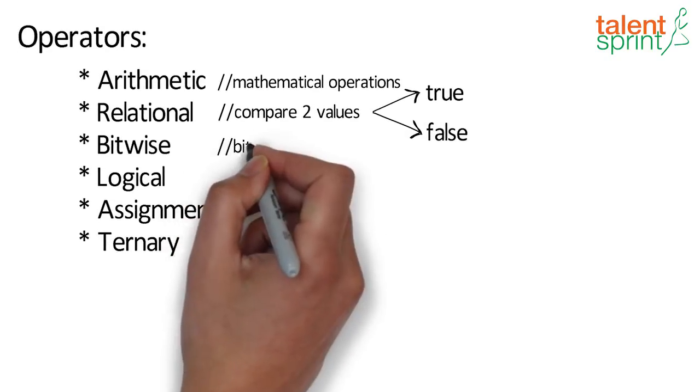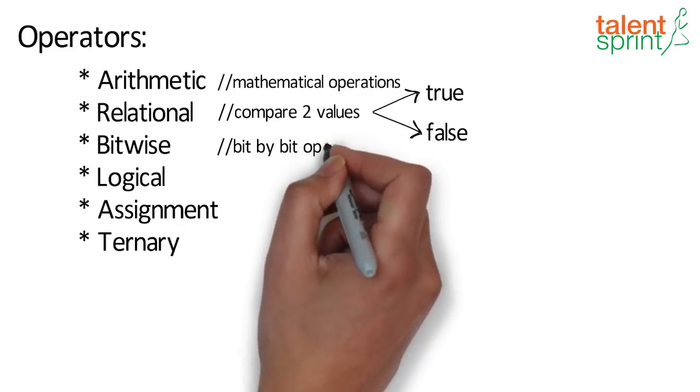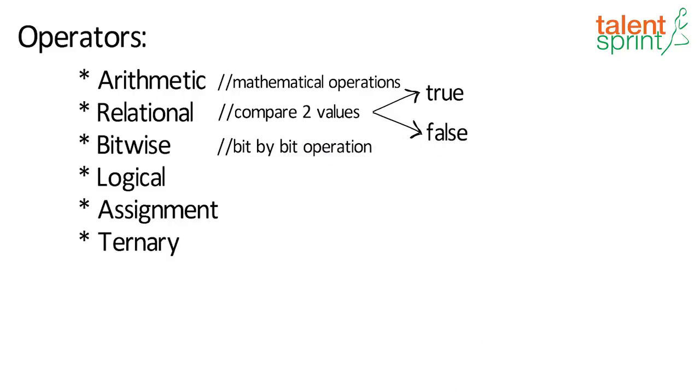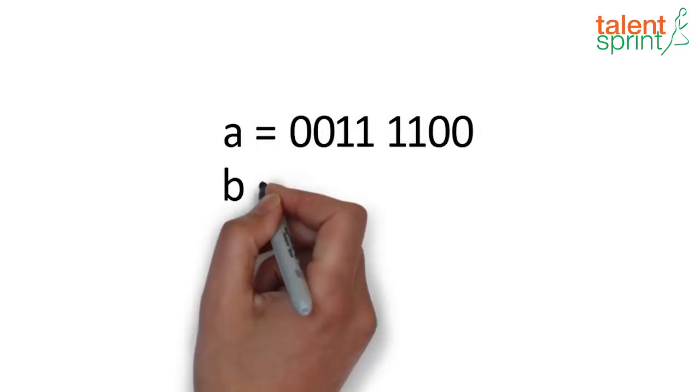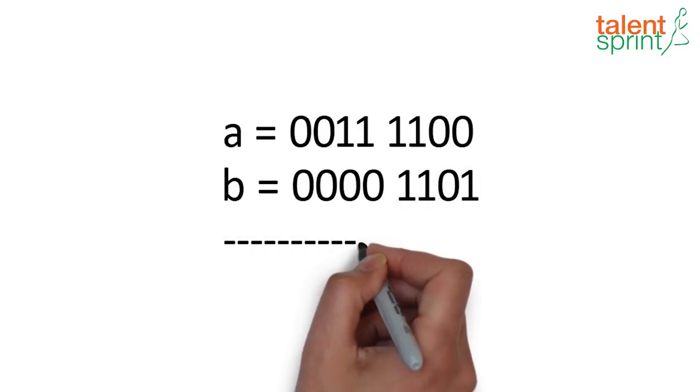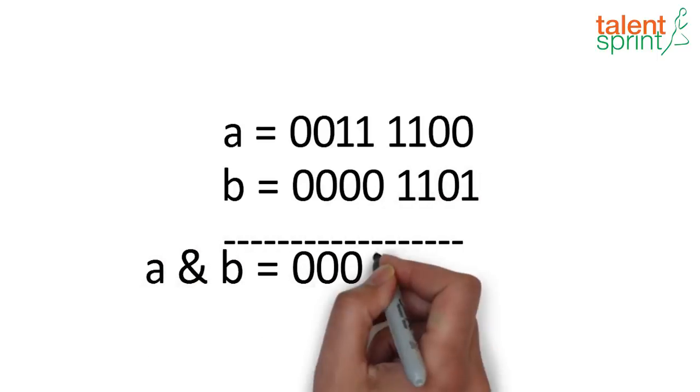Bitwise operators work on bits and perform bit by bit operations. For example if we have two variables a and b, the AND operation will work on the bits and give the output as shown.